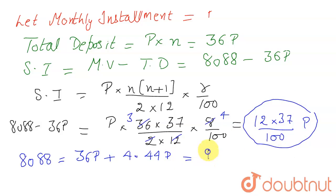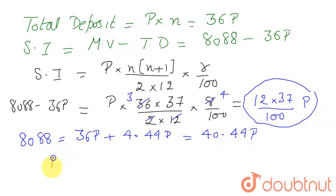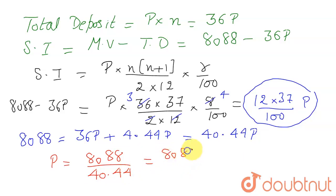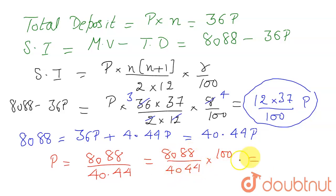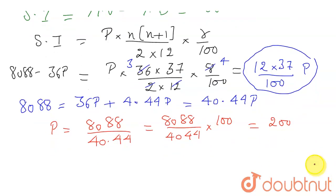So the total becomes 36P + 4.44P = 40.44P. This equals 8088. Therefore P = 8088 / 40.44, which we can write as 8088 × 100 / 4044. Simplifying, 8088 is 2 times 4044, so this gives us P = 200. His monthly installment is ₹200.